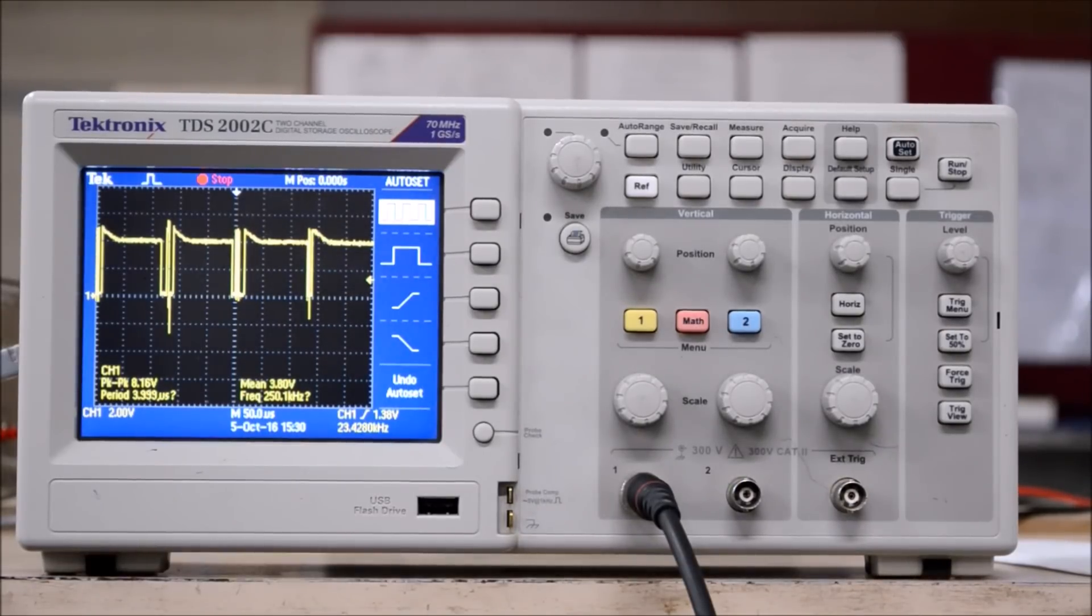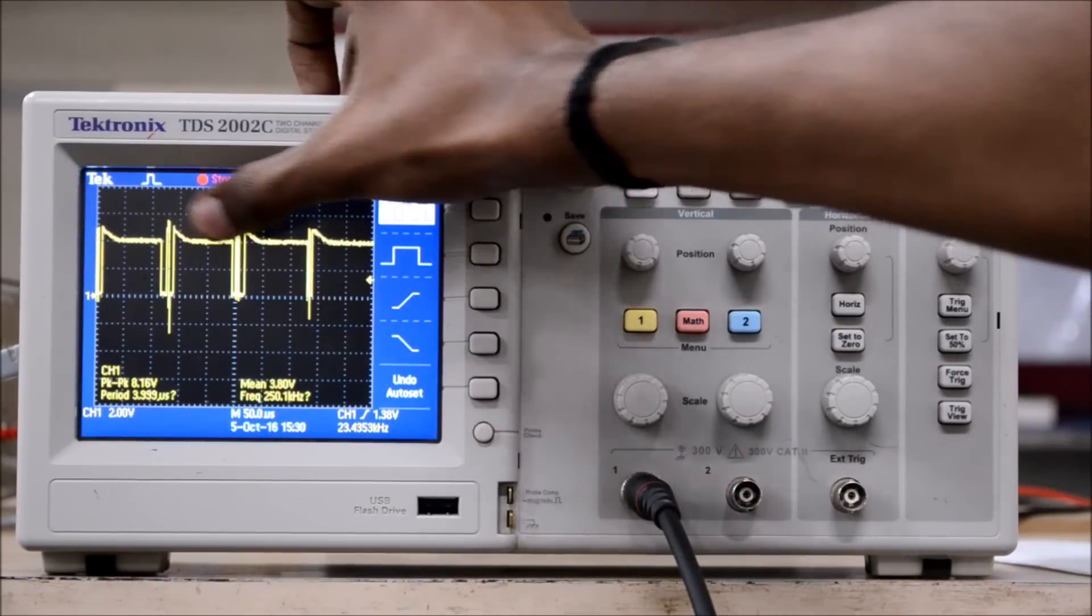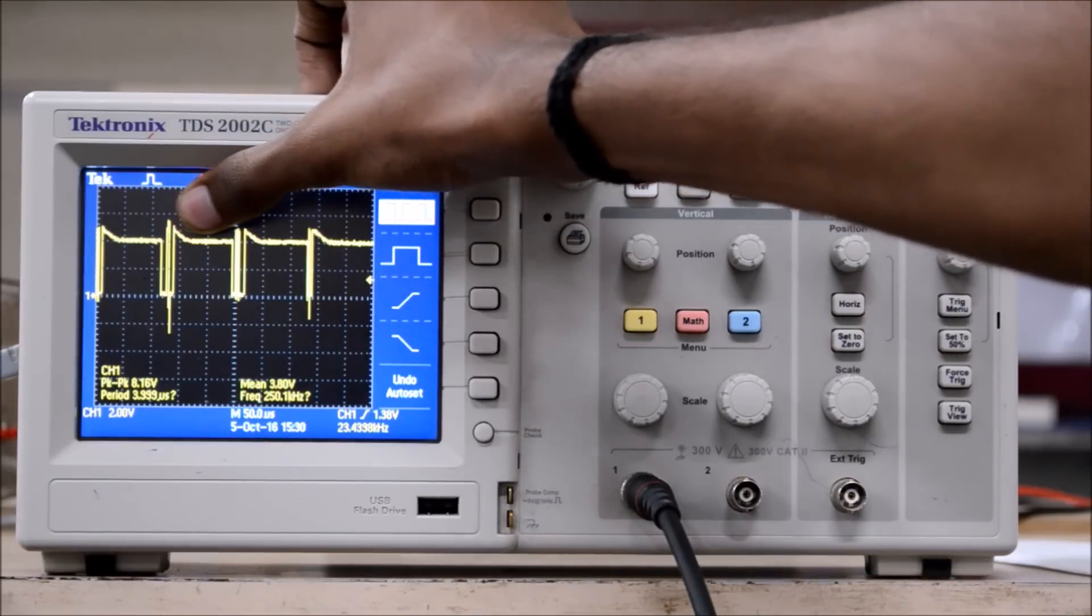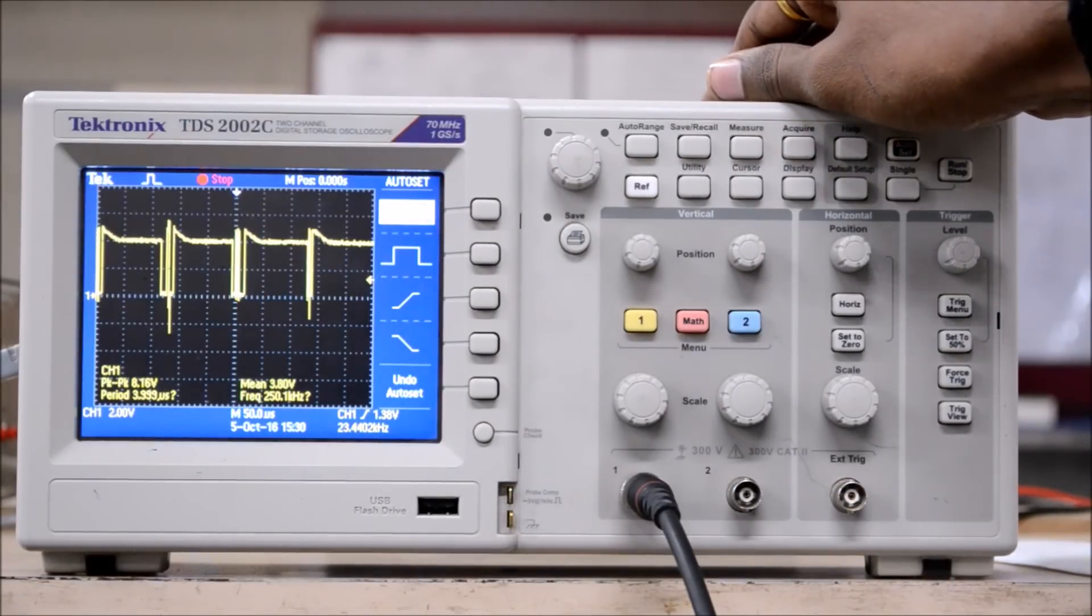Now here I have zoomed out the waveform. As you can observe, the time period for this much part is 125 microseconds. This is 1 upon our sampling frequency. The sampling frequency of the Castronica kit is 8 kHz. So 1 upon 8 kHz gave us 125 microseconds.